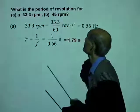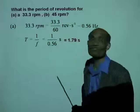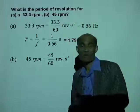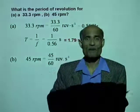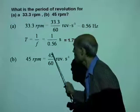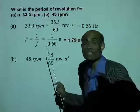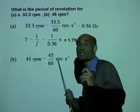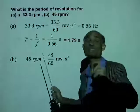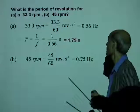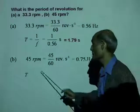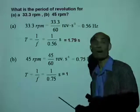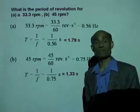What is the period of a 45 RPM record? It was a smaller record. 45 RPM means 45 revolutions in one minute, so it is 45 divided by 60 revolutions per second, which is 0.75 hertz. Therefore, the period is 1 over 0.75, which equals 1.33 seconds.